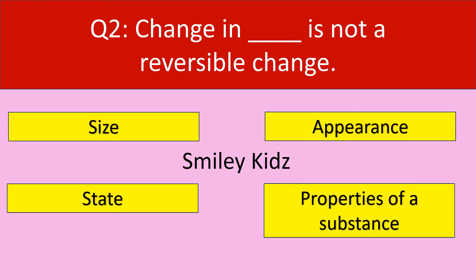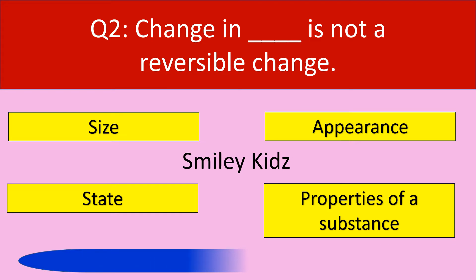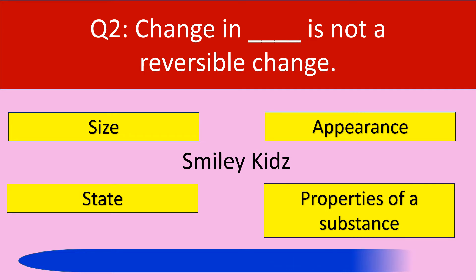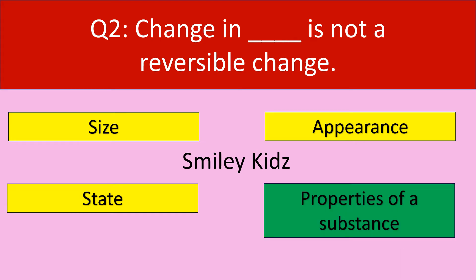Question number 2. Change in dash is not a reversible change. Options are size, appearance, state, properties of a substance. Your time starts now. Your time is up and the correct answer is properties of a substance. Change in properties of a substance is not a reversible change.